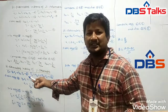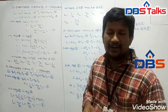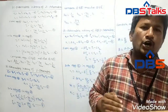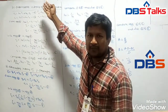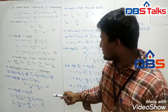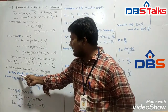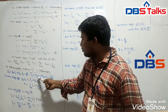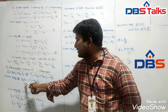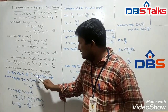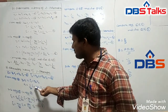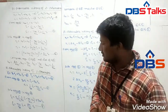Now H parameters in terms of Y parameters. As usual, the definition of H parameters is that input voltage and output current must be expressed in terms of input current and output voltages (equations 1 and 2). From the definition of Y parameters, input and output currents must be expressed in terms of input and output voltages: I1 = Y11·V1 + Y12·V2 (equation 3). Rearranging, V1 = 1/Y11 · I1 − Y12/Y11 · V2 (equation 5).